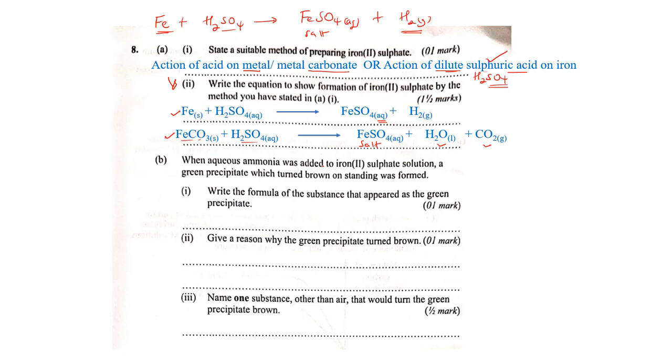Part B: When aqueous ammonia was added to iron(II) sulfate solution, a green precipitate which turned brown on standing was formed. We are having iron sulfate and adding it to aqueous ammonia, which is basically ammonium hydroxide solution. If you add iron sulfate to aqueous ammonia, you are adding iron(II) ions to a solution that contains hydroxide ions.